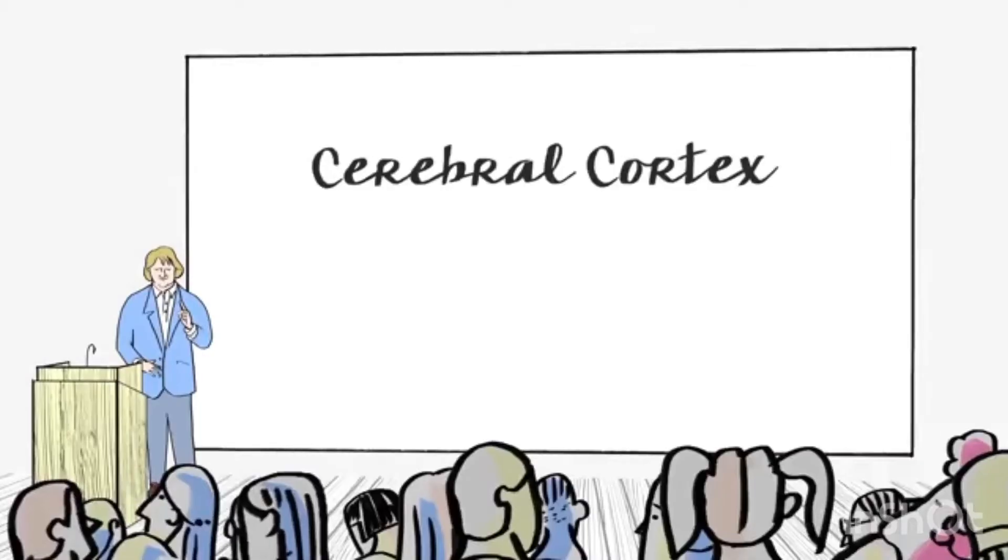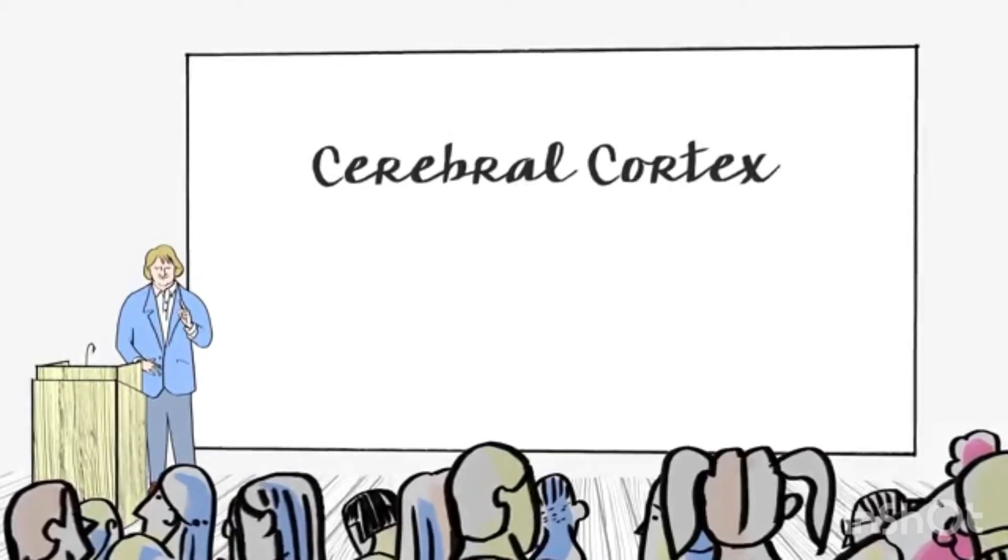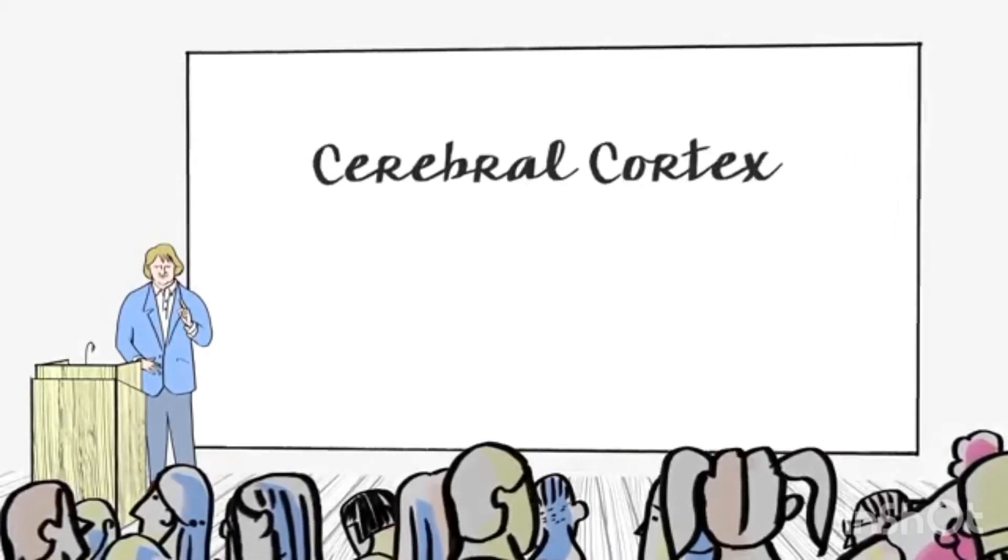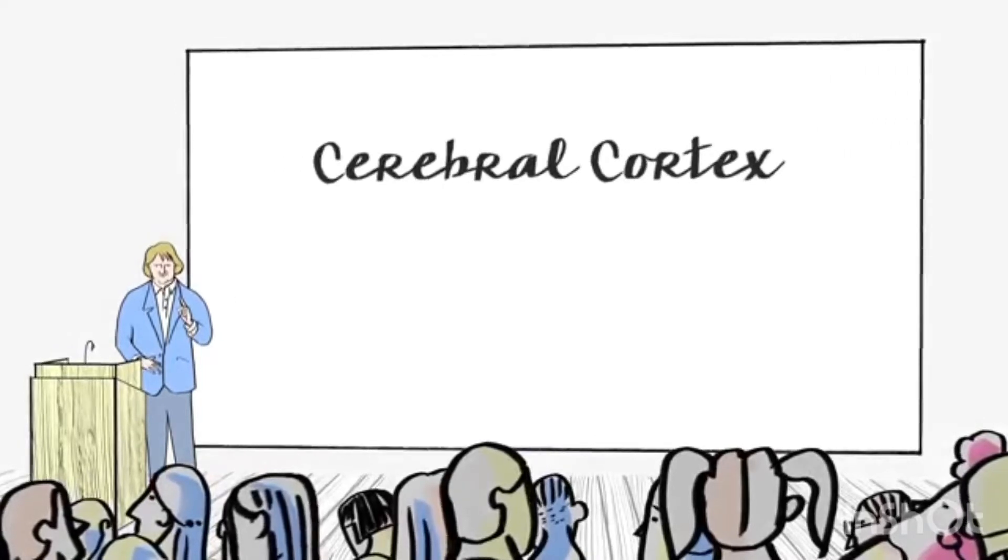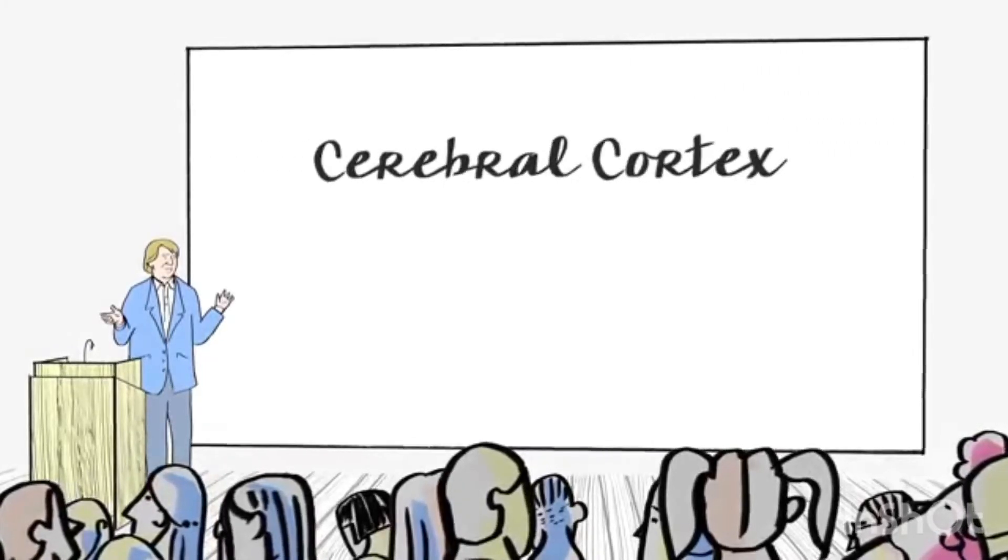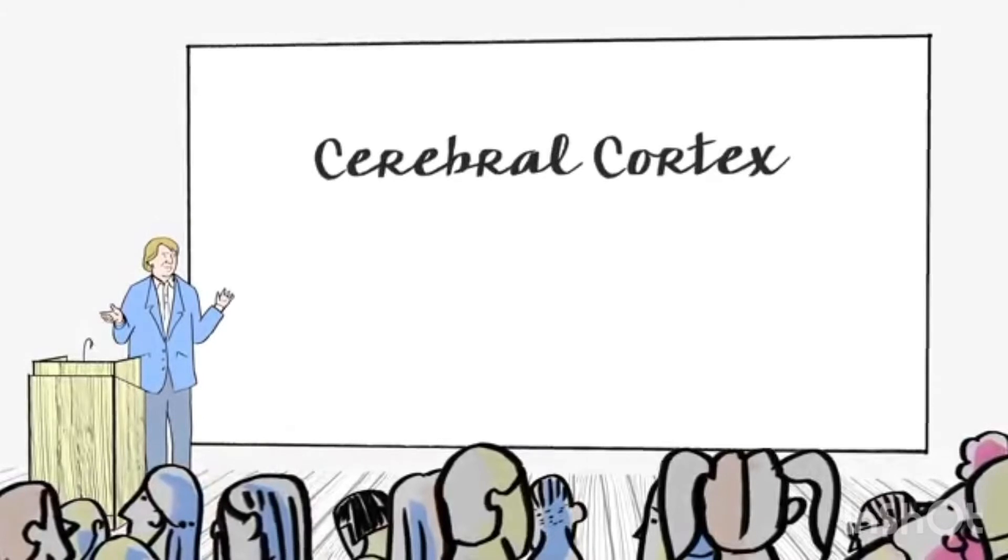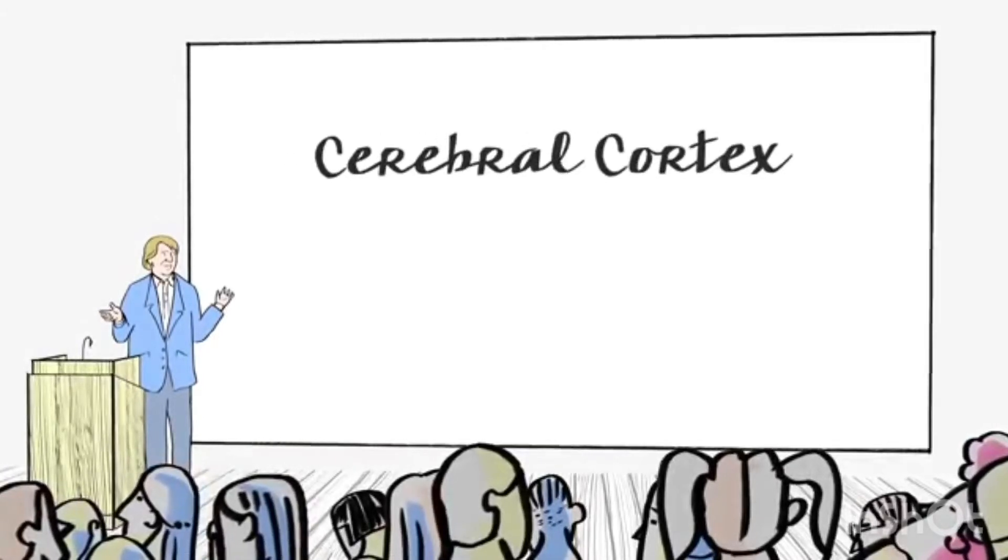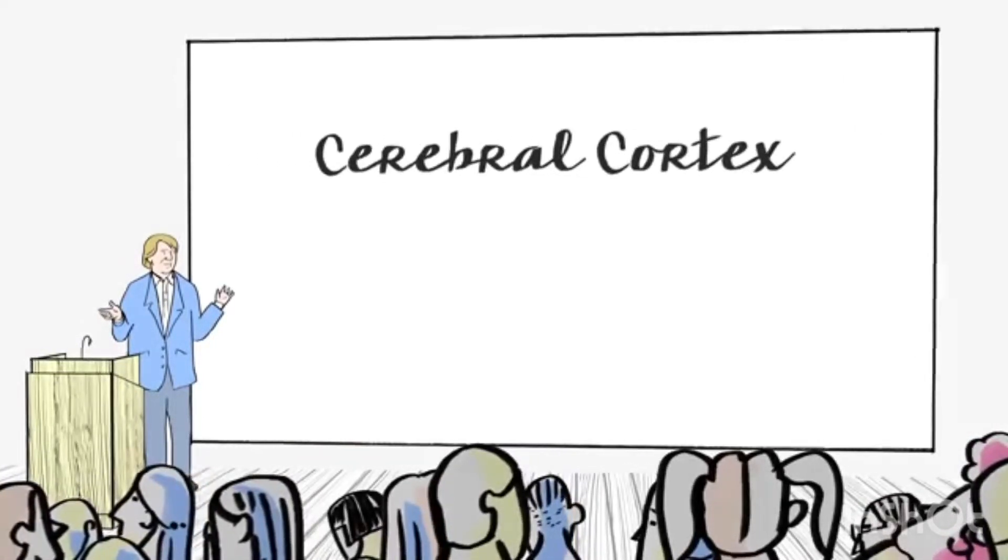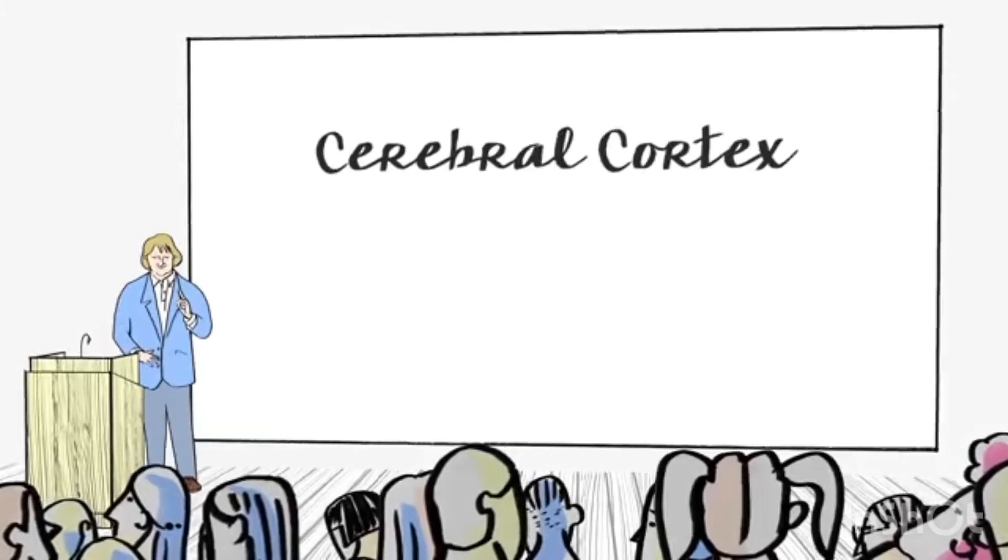When you look at the cortex you'll see it has two halves. It has a left half and right half. For each of those halves, when you look at it, you can demarcate the cortex into different lobes.